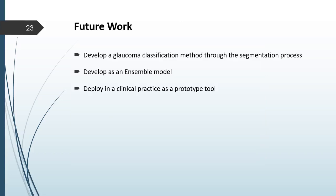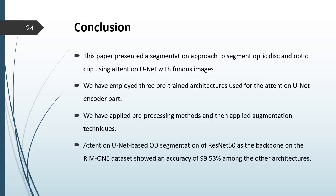As future work, we plan to develop a glaucoma classification method through the segmentation process, develop an ensemble model, and finally deploy it in clinical practice as a prototype tool. In conclusion, this paper presented a segmentation approach to segment optic disc and optic cup using an attention U-Net with fundus images. We employed three pre-trained architectures for the attention U-Net encoder path, applied pre-processing and data augmentation techniques to address the class imbalance issue. The attention U-Net optic disc segmentation with ResNet-50 as the backbone on the RIM-1 dataset achieved an accuracy of 99.53%, the best among all architectures tested.